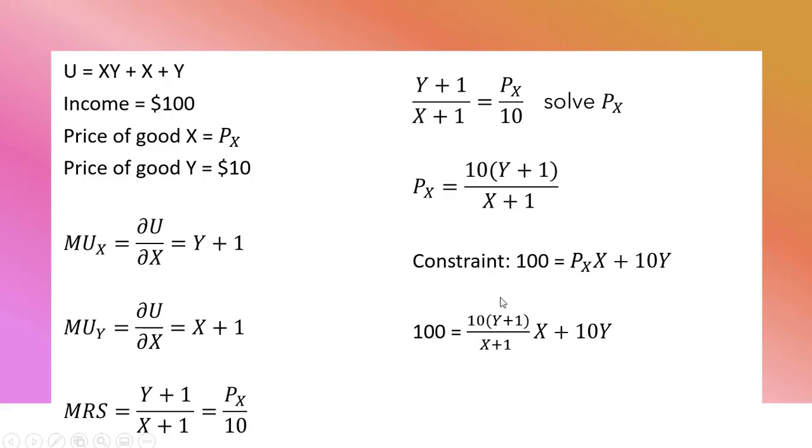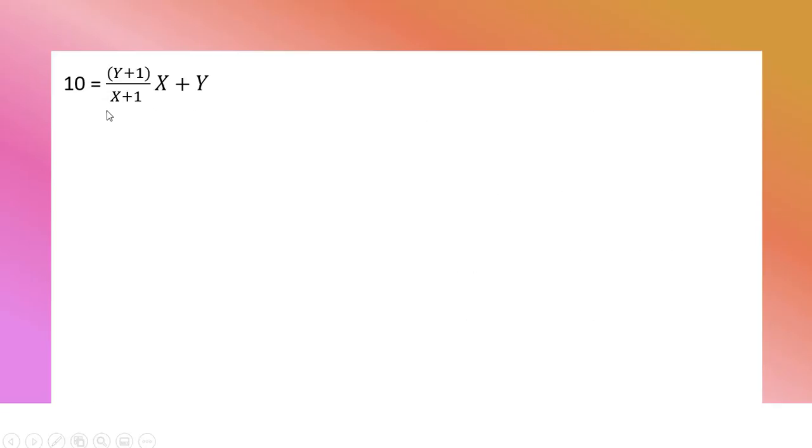Now we're going to simplify this for Y. The first thing I'm going to do is divide everything through by 10. So 100 divided by 10 is 10, and then these 10s on the right-hand side cancel. Moving on, just rewriting that last result, and then taking this X and multiplying it by Y and then multiplying it by 1.